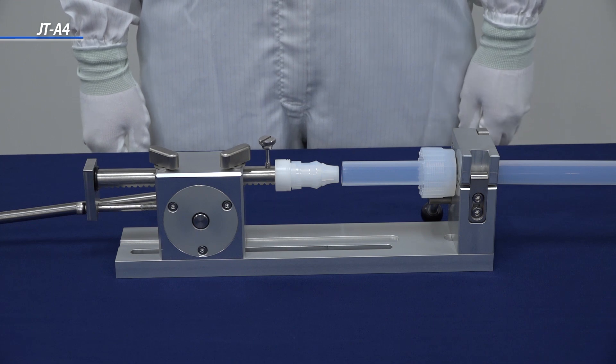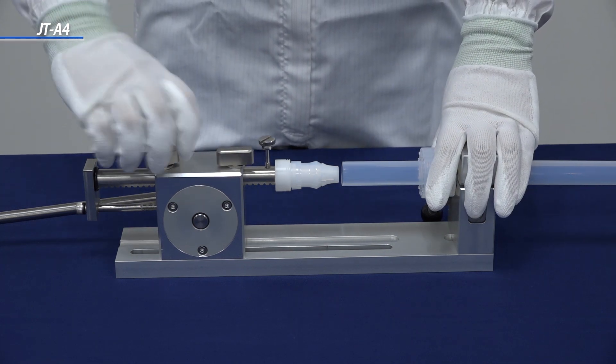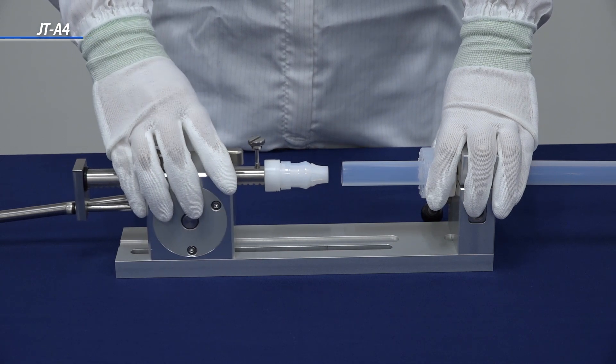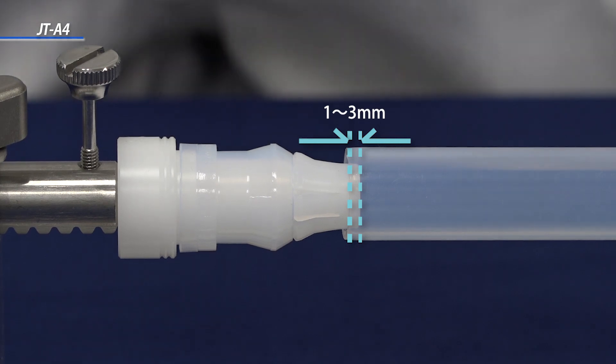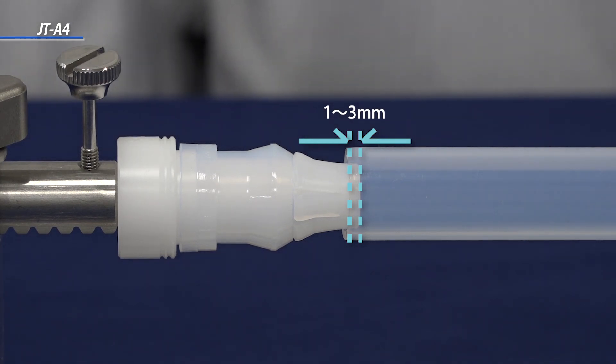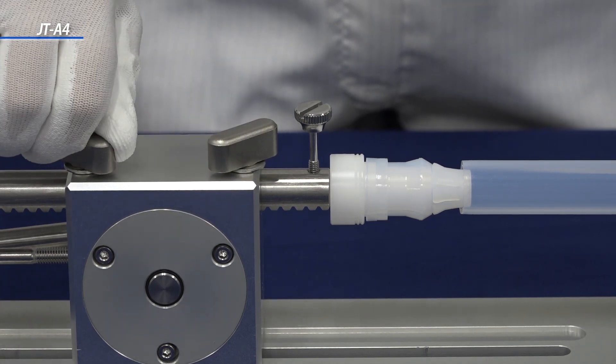The set screw on the sleeve holder is adjustable according to various size sleeves. Loosen the set screw and slide the insertion tool body until the leading edge of the diameter expansion ring is one to three millimeters inside the end of the tube, and then tighten the set screws.